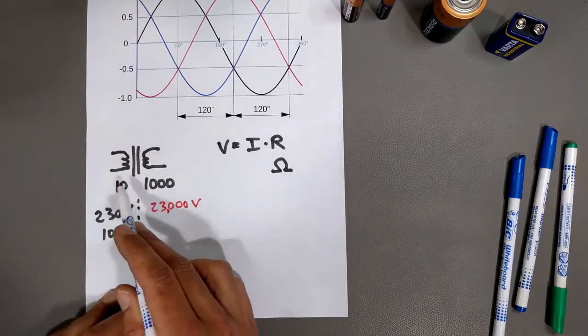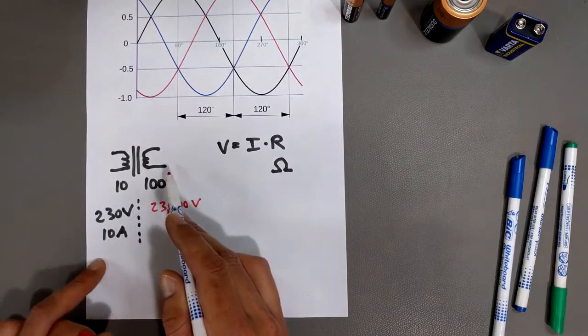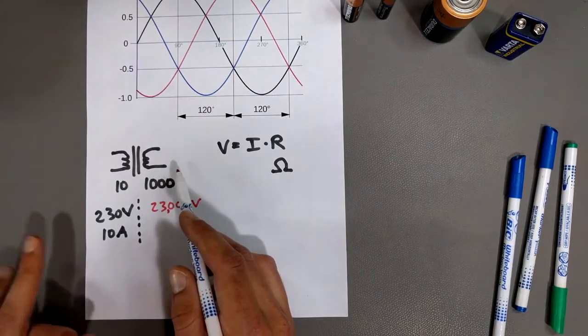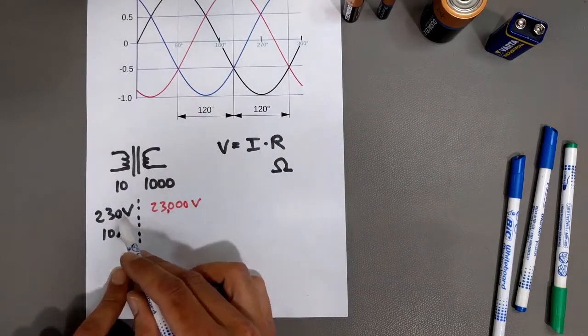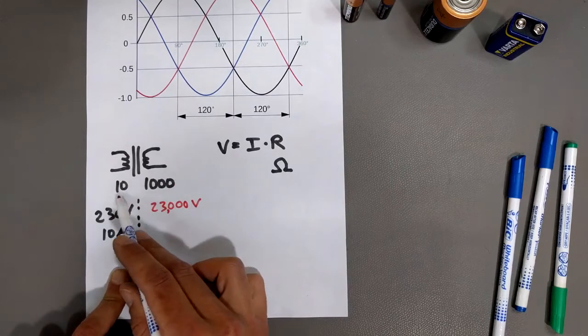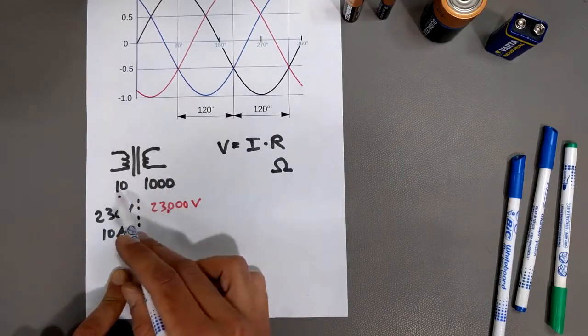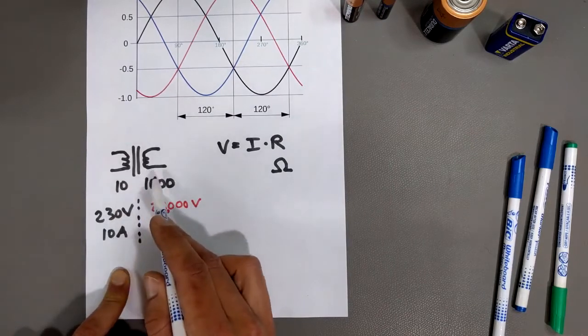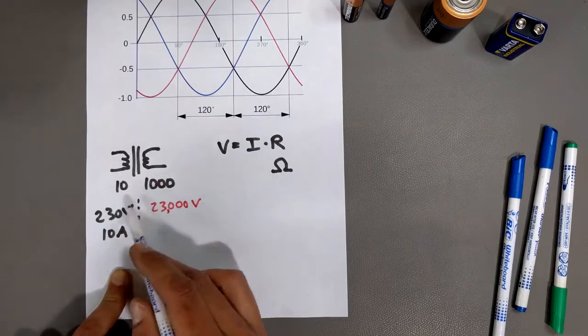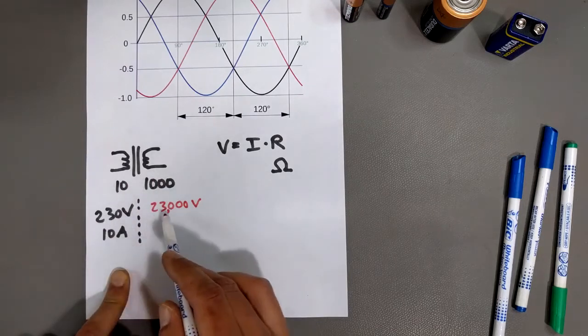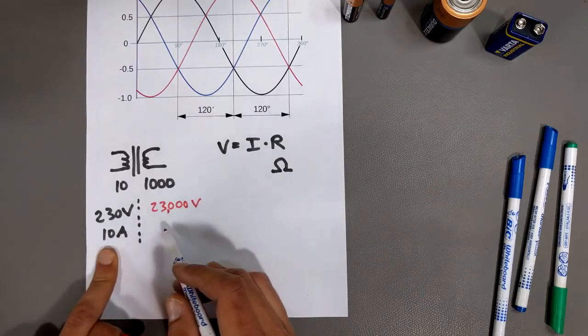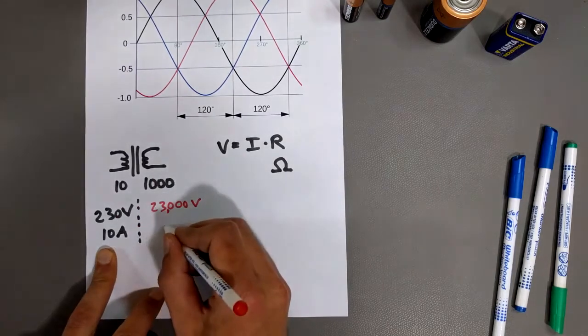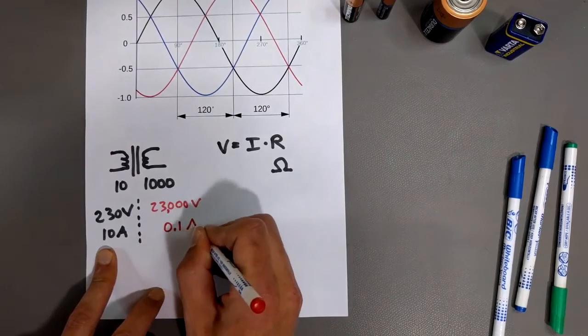If it steps up the voltage, it steps down the current, and vice versa. So it steps the voltage up by a factor of, this is a ratio of 1 to 100. 1000 divided by 10 is 100, so this is 100 times more turns than this. So you put 230 volts in, you get 23,000 volts out, 100 times more, and this is going to be 100 times less. So you're going to end up with 0.1 amps.